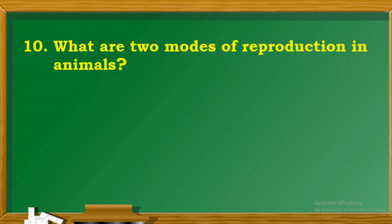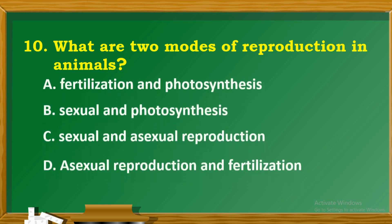Question 10: What are the two modes of reproduction in animals? A. Fertilization and photosynthesis. B. Sexual and photosynthesis. C. Sexual and asexual reproduction. D. Asexual reproduction and fertilization.